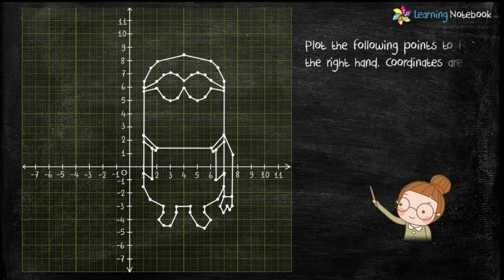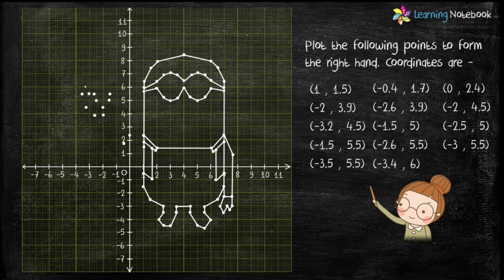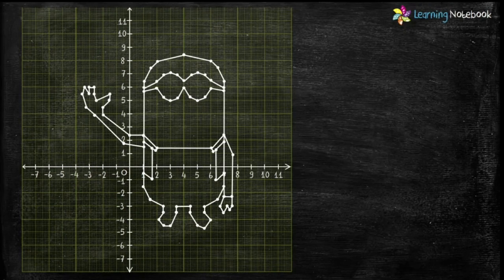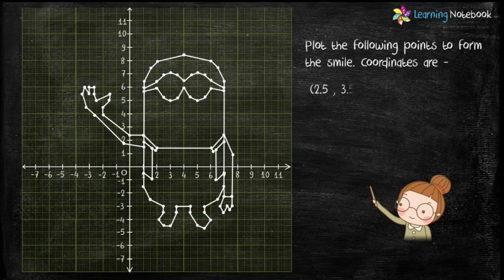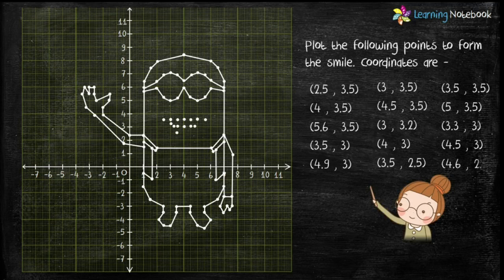In the similar way, plot the given points to form the right hand of the minion, then join these plotted points. Now with the help of the following points, form the smile of the minion. Join these plotted points to complete the smile.